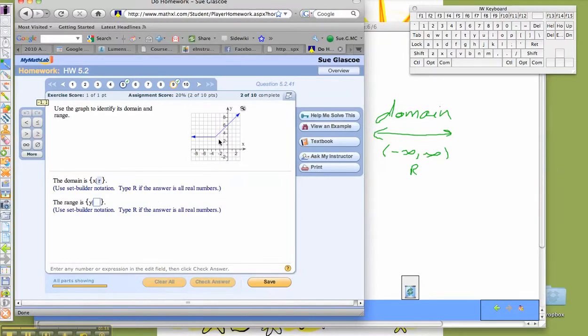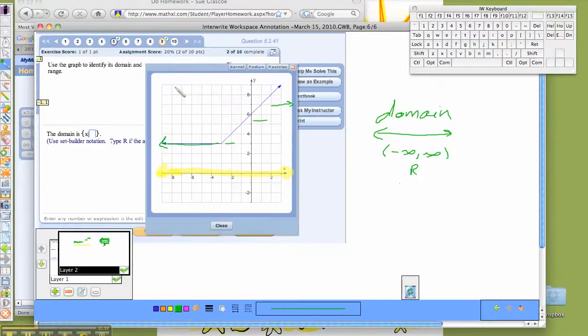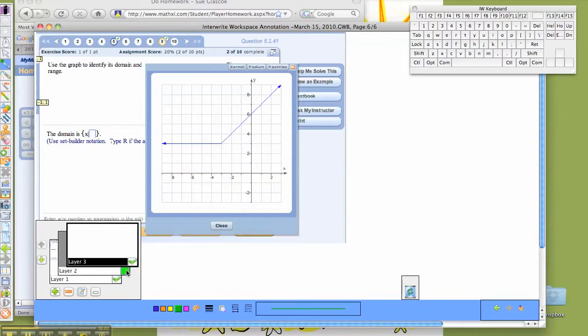So now they want the range, which I'm looking up and down. So I go back over here to my whiteboard and I'm going to add a layer. I'm going to turn off the layer that had my domain on it, so now I'm just looking at a blank layer here.